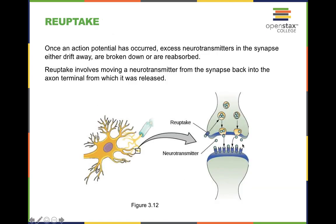Whenever it comes to reuptake, I simply mean reabsorption. There are a lot of drugs that can prevent the reabsorption of particular neurotransmitters so they can continue binding to their applicable receptor and continue an action potential. A common psychotropic medication — which is a medication strictly focused on assisting people with mental difficulties — is an SSRI. SSRI stands for Selective Serotonin Reuptake Inhibitor. The neurotransmitter it's acting on is serotonin, and it inhibits the reabsorption of that serotonin back into the presynaptic cell.